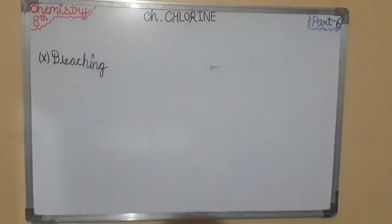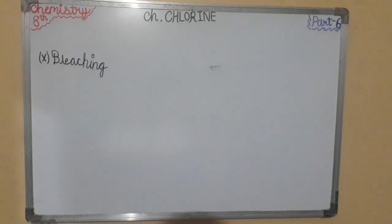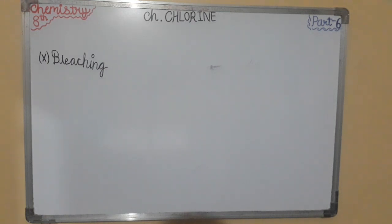The second point is Role of Cl2 in Bleaching. Chlorine comes in contact with moisture to liberate nascent oxygen. The first step is: chlorine reacts with water to give a mixture of hydrochloric acid and hypochlorous acid, HOCl. The reaction is: Cl2 + H2O → HCl + HOCl. The second reaction is: hypochlorous acid is unstable and decomposes forming nascent oxygen. The reaction is: HOCl → HCl + nascent oxygen.